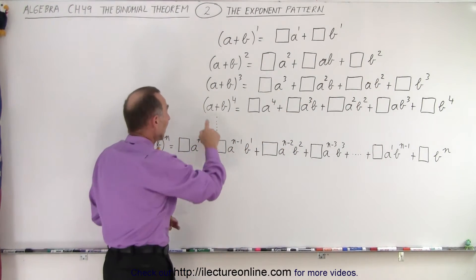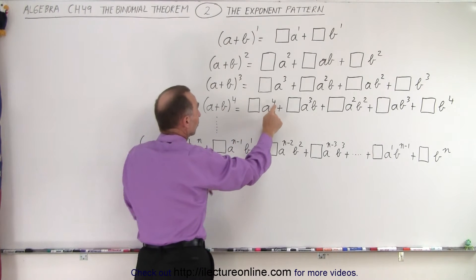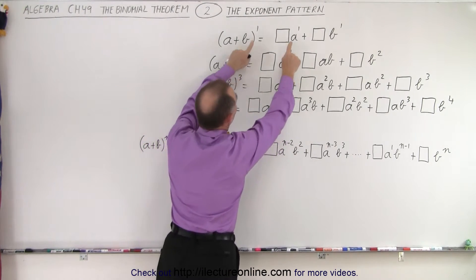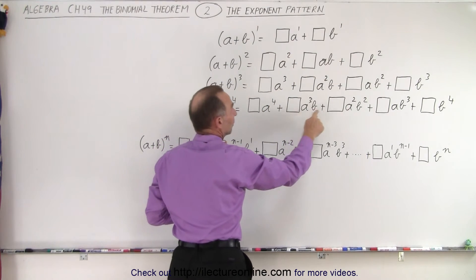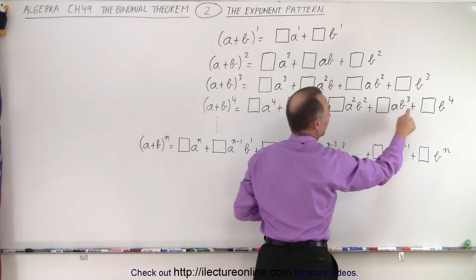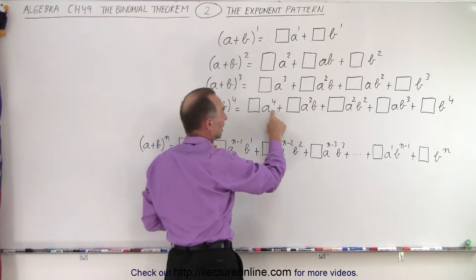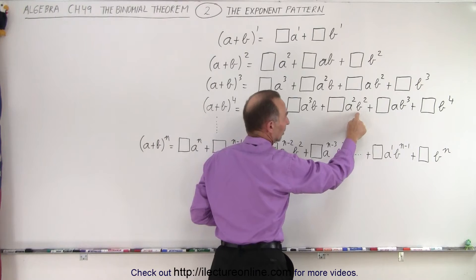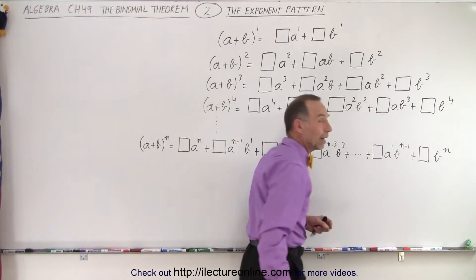Now let's look at (a + b) to the fourth power. We start with a to the fourth power — notice the exponents always match — then a to the third, a to the second, a to the first, and a to the zero. For the b term, we start with b to the zero, then b to the first, b to the second, b to the third, and b to the fourth power.